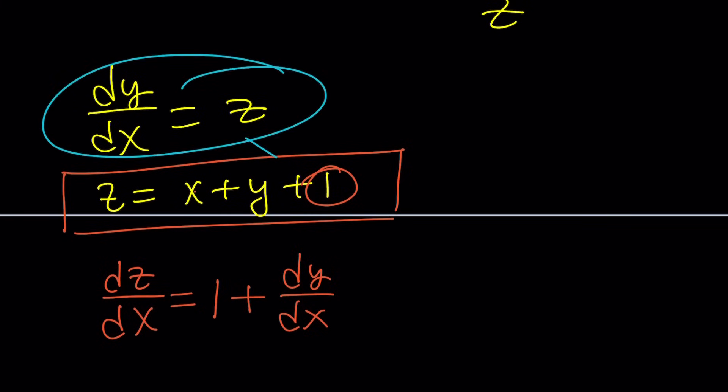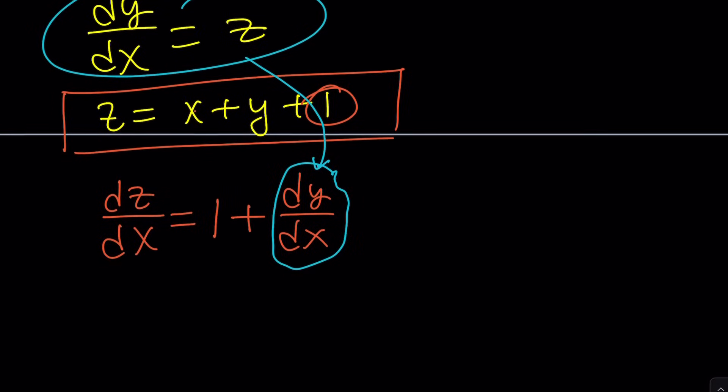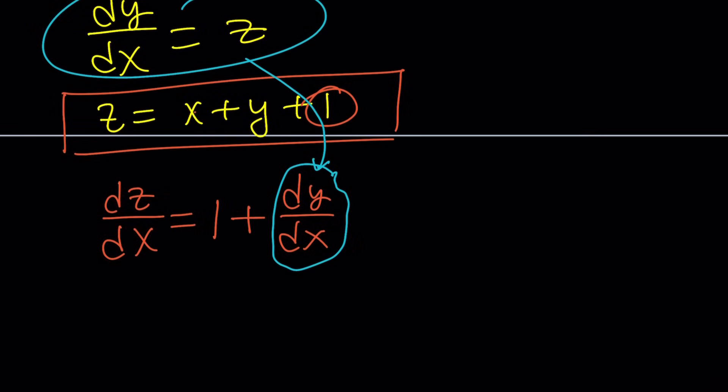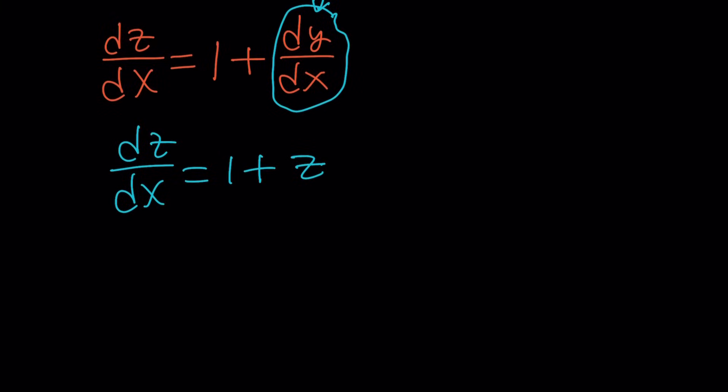So our goal was actually to get rid of y because we kind of changed our variable from x to z. And obviously, you don't want to have anything that contains y in your new equation. So replace dy/dx with z. That makes sense, doesn't it? And you'll get a separable, nice, beautiful differential equation. Very easy to solve.